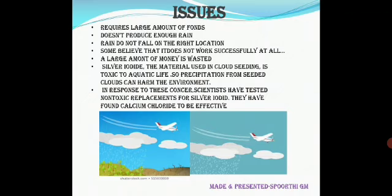Issues with cloud seeding include: it requires a large amount of funds, it does not always produce enough rain, and rain may not fall on the right location. Some believe that it does not work successfully at all times. Additionally, the material used in cloud seeding is toxic to aquatic life, so precipitation from seeded clouds can harm the environment. In response to this concern, scientists have tested non-toxic replacements for silver iodide and have found calcium chloride to be effective.